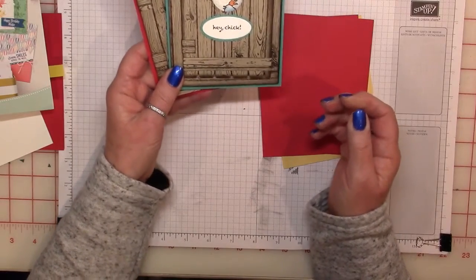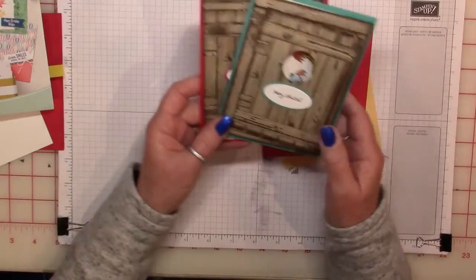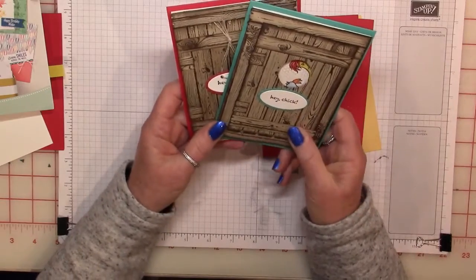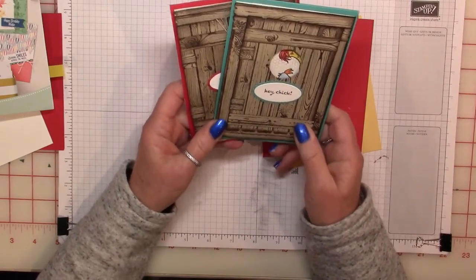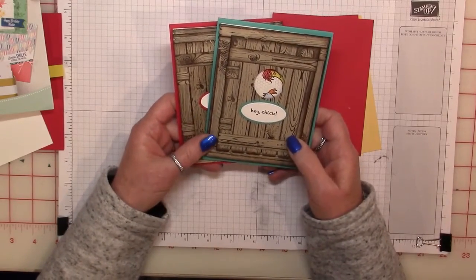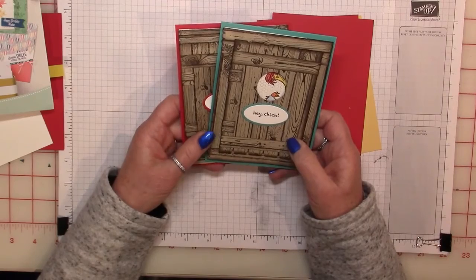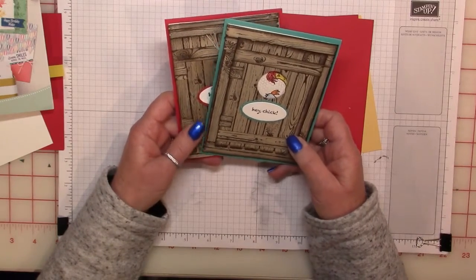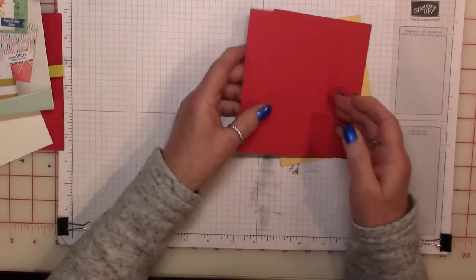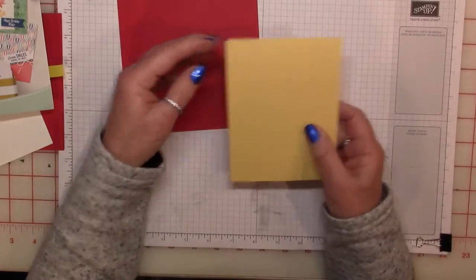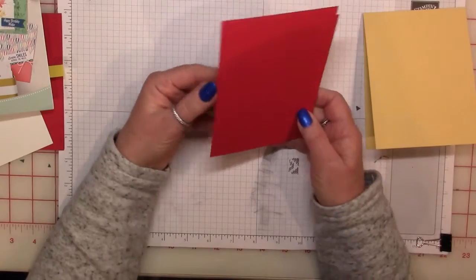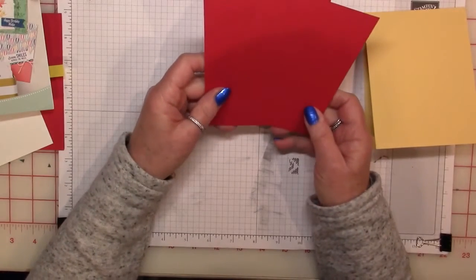So for this next card, one more thing. For color choices, see how I made one with red card base and one with the Bermuda Bay? Because I went on Google Images and looked for chicken coops, and oh my gosh, I can't believe how many there are out there, but they come in all different colors. People paint them in fun colors. I saw pink ones and blue ones and pale blue ones and purple ones, and it's just amazing. So for this next variation, I'm going to use So Saffron as my card base, and my weathered wood is going to be red.